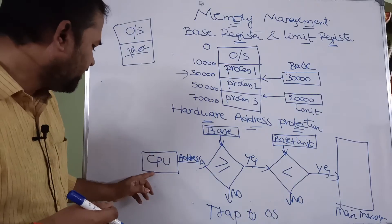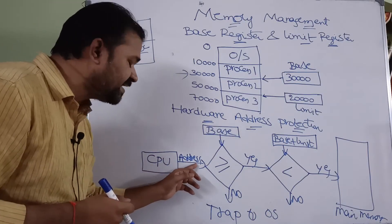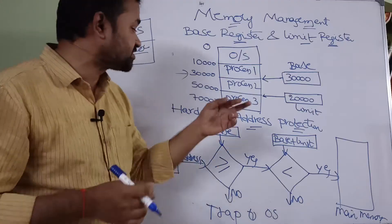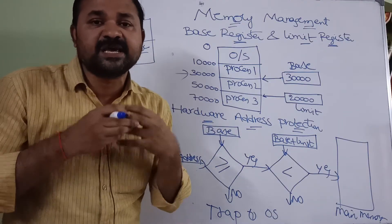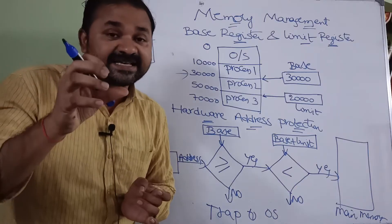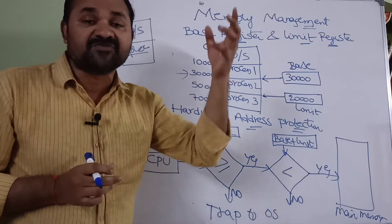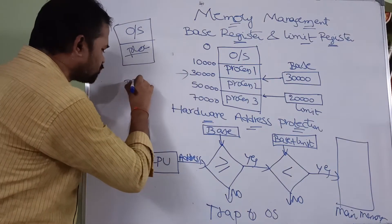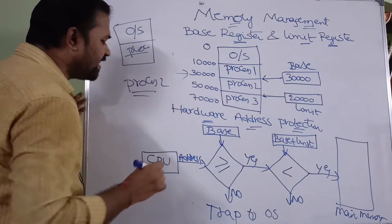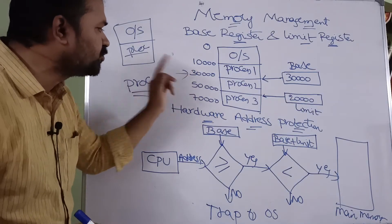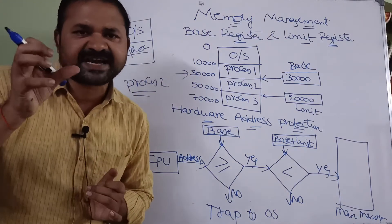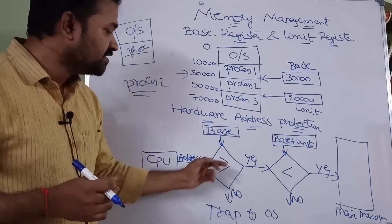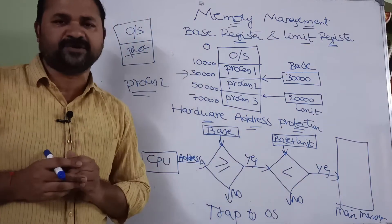Next, let us discuss hardware address protection. Here we have a CPU generating an address. It is the responsibility of the hardware to check whether that address is a valid address or not. Let the CPU be executing process 2. The valid addresses for process 2 range from 30,000 to 50,000. If an instruction address falls within 30,000 to 50,000, it is a valid instruction and will be executed by the CPU.